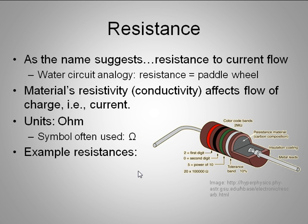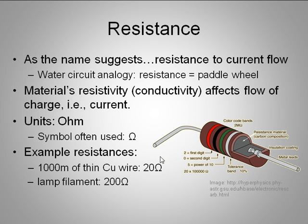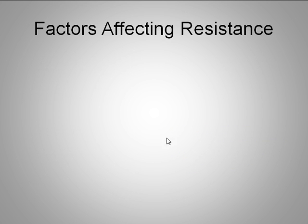Example resistances: a kilometer of thin copper wire would have about 20 ohms of resistance. That's a long wire - even a very good conductor has some measurable resistance. A lamp filament, if you break open a bulb, that tungsten filament would have a resistance of about 200 ohms. A human body would be about 2 mega or 2 million ohms.